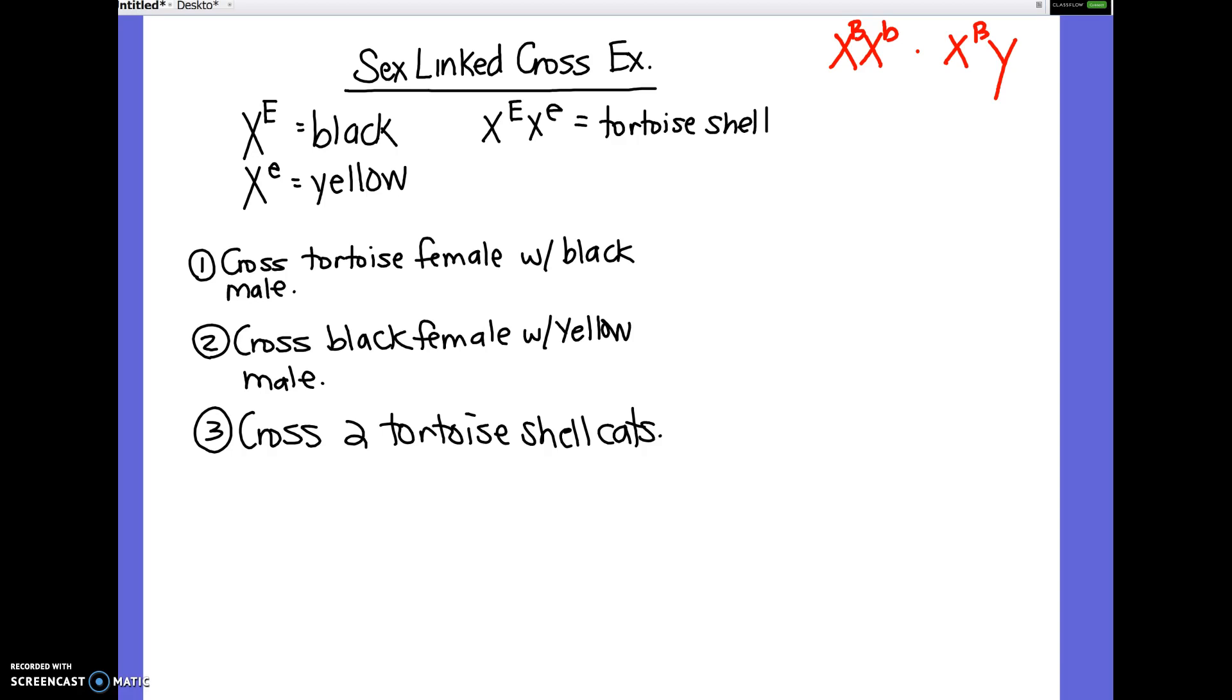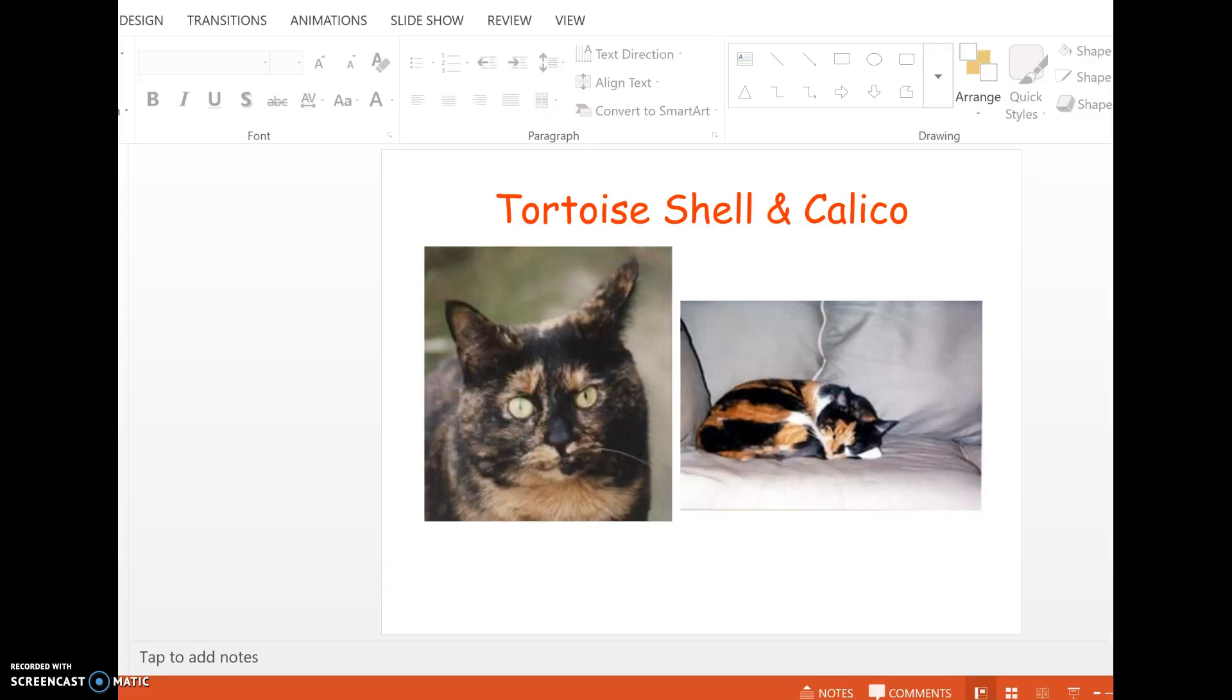So if you think of tortoiseshell cats or calico cats, these cats, tortoiseshell and calico, they're always going to be female because in order to be tortoiseshell or calico, you have to be X big E, X little E.